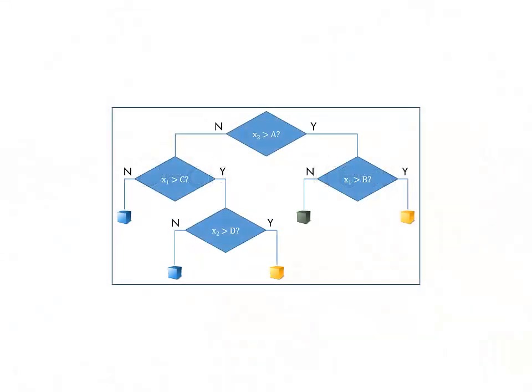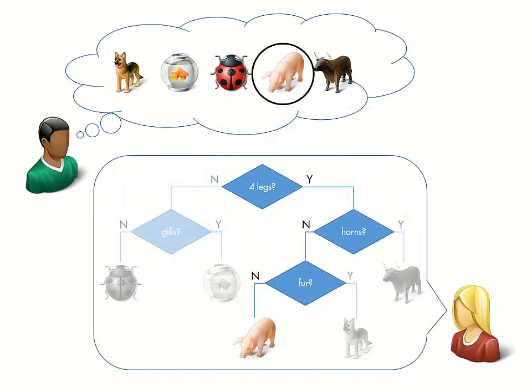Binary decision trees classify observations by creating a sequence of yes-no questions, similar to many common guessing games, where players ask questions to figure out what someone is thinking.